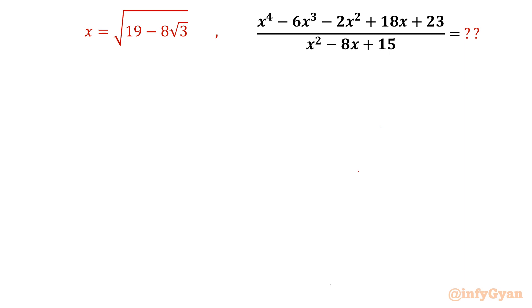In this very exciting video of Math Olympiad challenging problems, we will be simplifying one expression: x^4 - 6x^3 - 2x^2 + 18x + 23 divided by x^2 - 8x + 15.